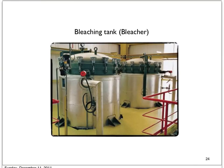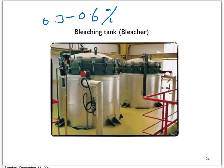This picture shows the bleaching tank. In the bleaching process, the bleaching earth or clay is added at around 0.3 to 0.6%. The process is done under vacuum to reduce damage to the oil because a high temperature of around 100 to 110 degrees Celsius is used.